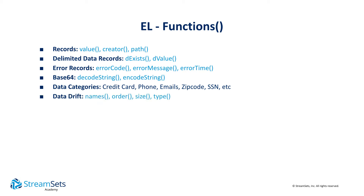Data drift functions generate alerts by monitoring for input data schema changes. For example, we can generate an alert if the number of fields and records are different than the number of fields expected. Credential functions allow for accessing sensitive information, such as passwords and secrets from a credential store — for example, HashiCorp Vault or AWS Secrets Manager.